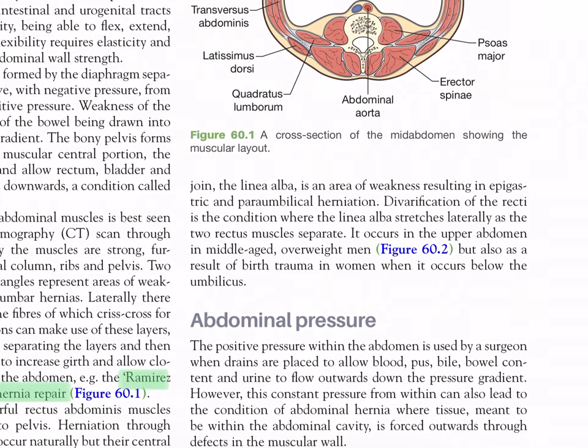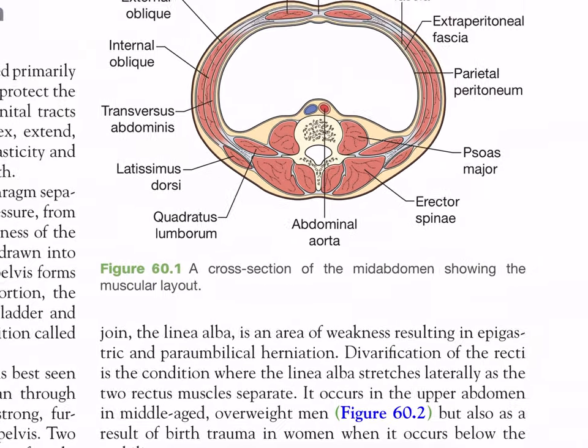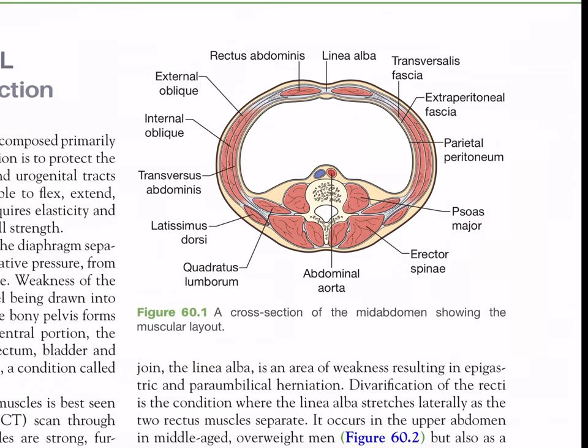Diastasis of the recti is the condition where the linea alba stretches laterally as the two recti muscles separate. It occurs in the upper abdomen in middle-aged overweight men, but also as a result of birth trauma in women. Figure 16 illustrates this.